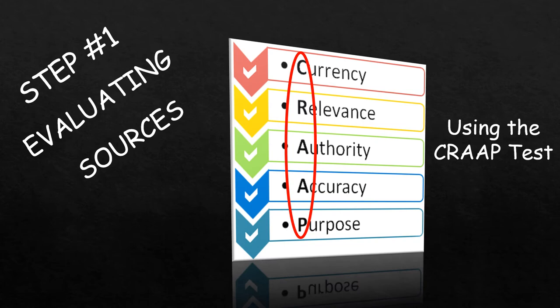It's easy to determine whether your sources are credible or not by using the CRAAP test. CRAAP is an acronym for Currency, Relevance, Authority, Accuracy, and Purpose.